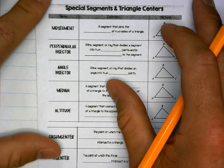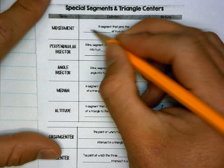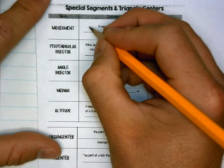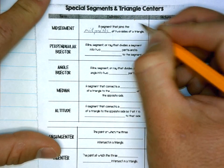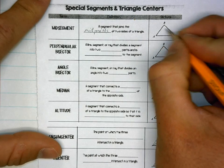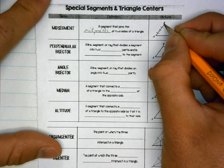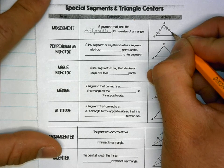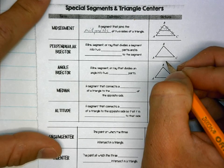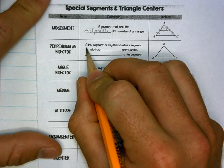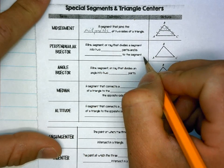These are notes on special segments and triangle centers. We've gone over mid-segment — the definition is a segment that joins the midpoints of the two sides of a triangle. If we said that this was the midpoint of that side, and this was the midpoint of that side, and we connected those two midpoints, that would create a mid-segment.